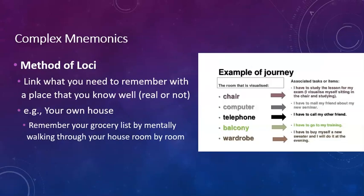And then the final one is the complex mnemonics. And so an example would be the method of loci. So this is a link where you link what you need to remember with a place that you know well, whether it's real or not. For example, your house. So you remember your grocery list by mentally walking through your house room by room. Or for me, what I do when I make my grocery list is I mentally walk through the grocery store so that I can put things down in the order that I'll meet them at the grocery store. If you guys ever watched the TV show Sherlock, then you know he has like that mind palace. So that would be the method of loci where you remember things based on where they are in your mental palace. Or you can remember things where they actually are. Where did I meet this person? Where did I meet that person? And you can remember people's names based on where you met them. So that's an example of a complex mnemonic.